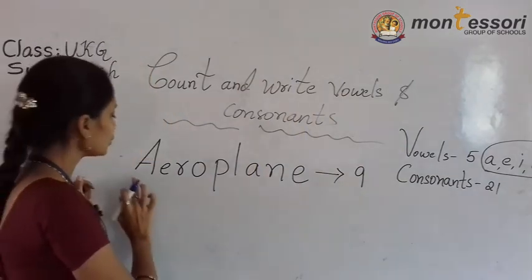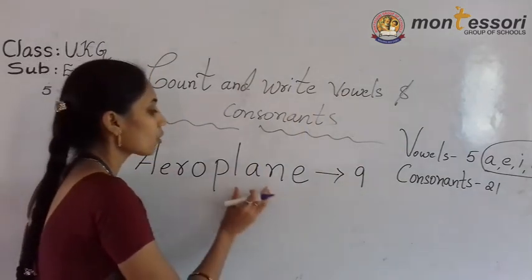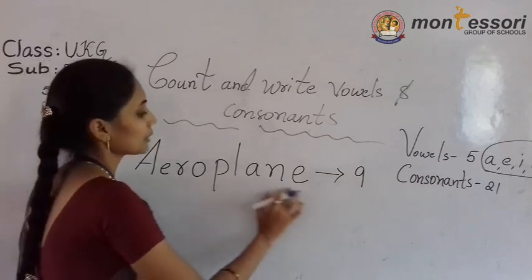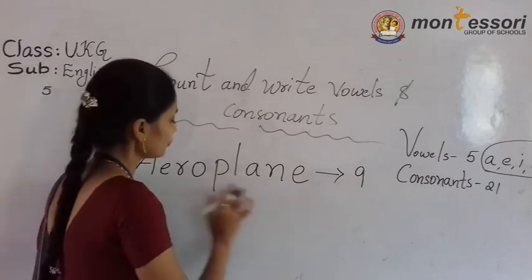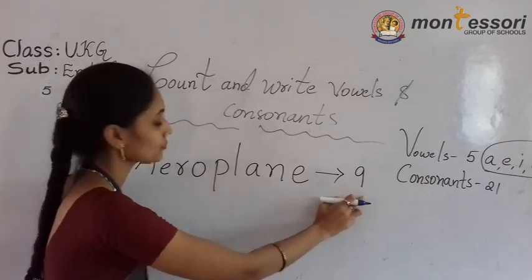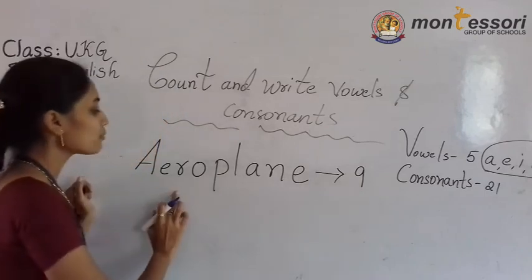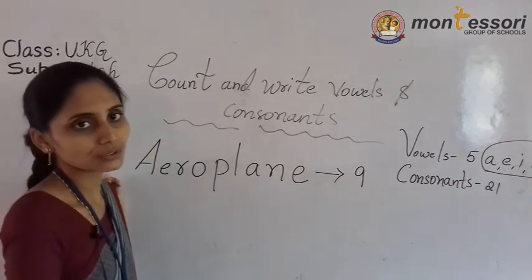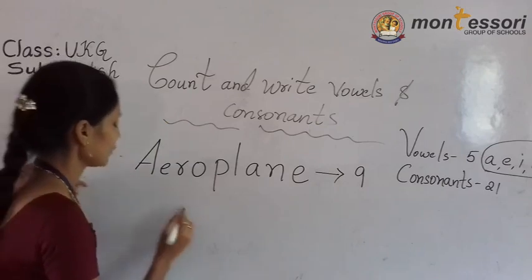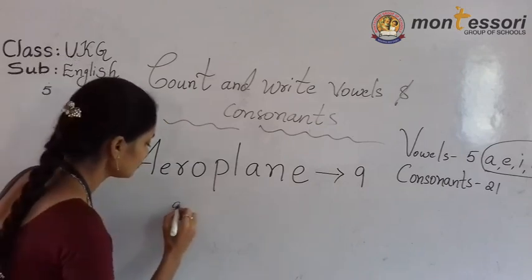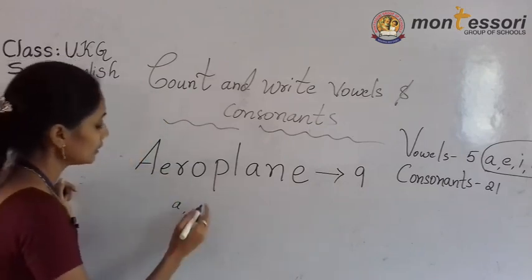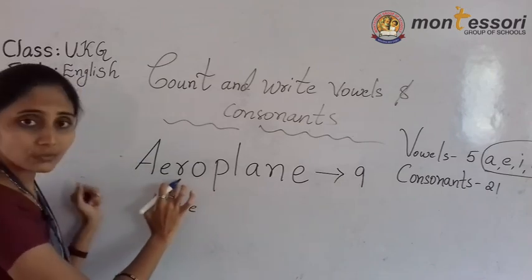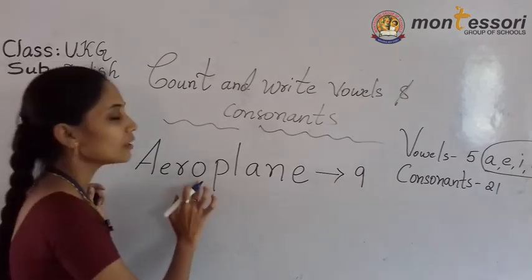Now, students, listen to vowel letters and consonants. First, this word has 9 letters. Now, first, let's listen to any vowels and consonants. A — vowel. E — vowel. R — vowel. R — vowel. O — vowel.